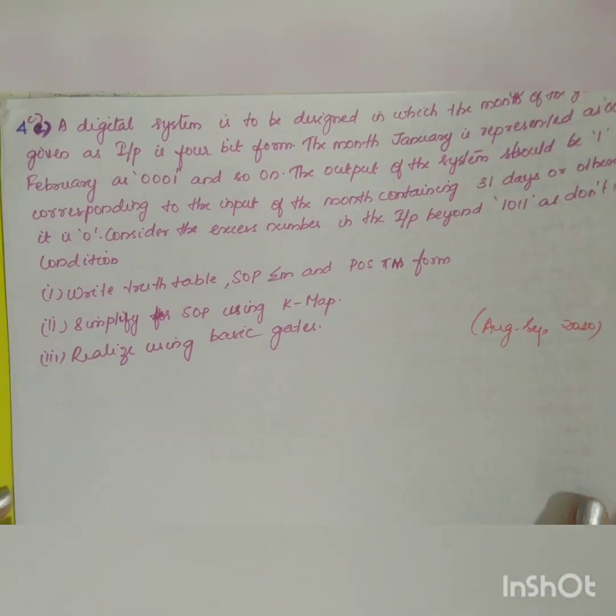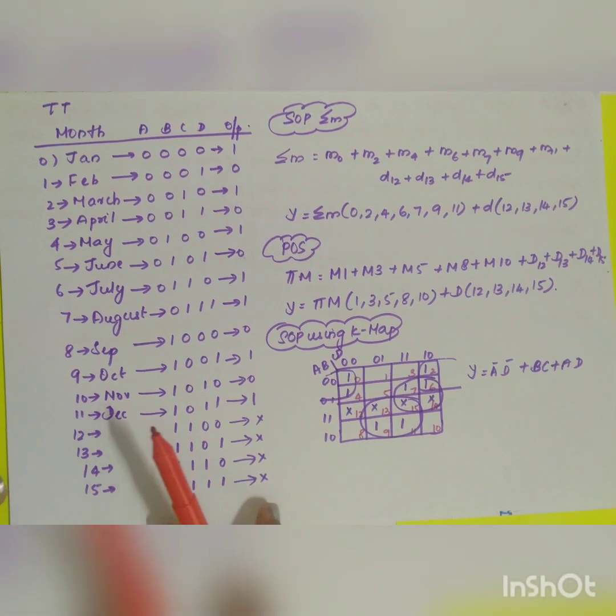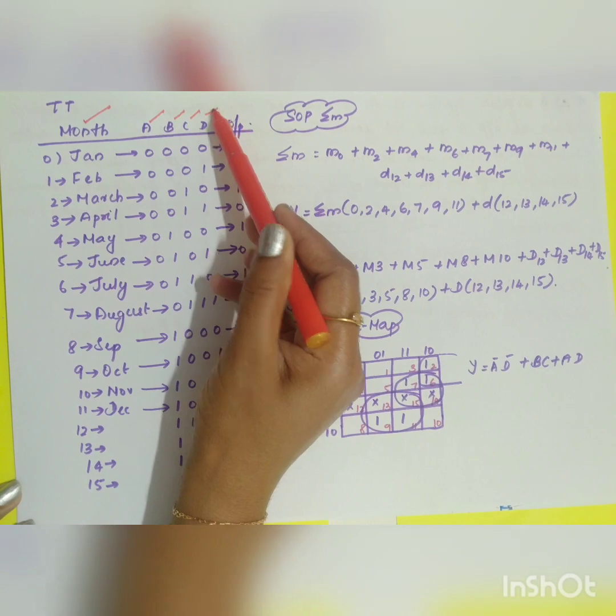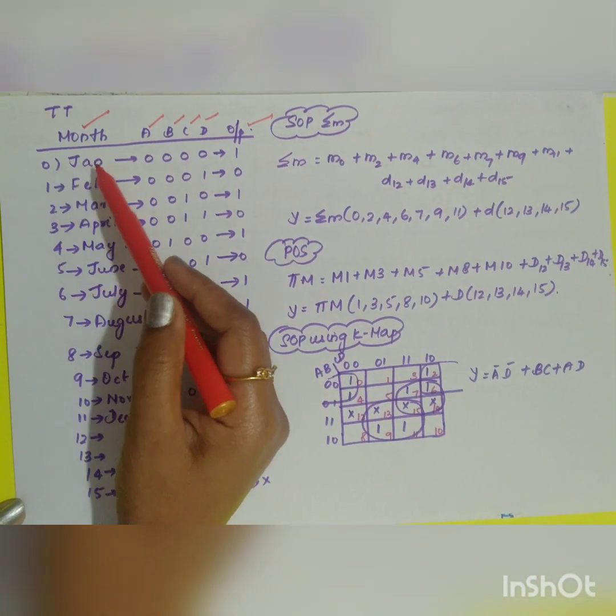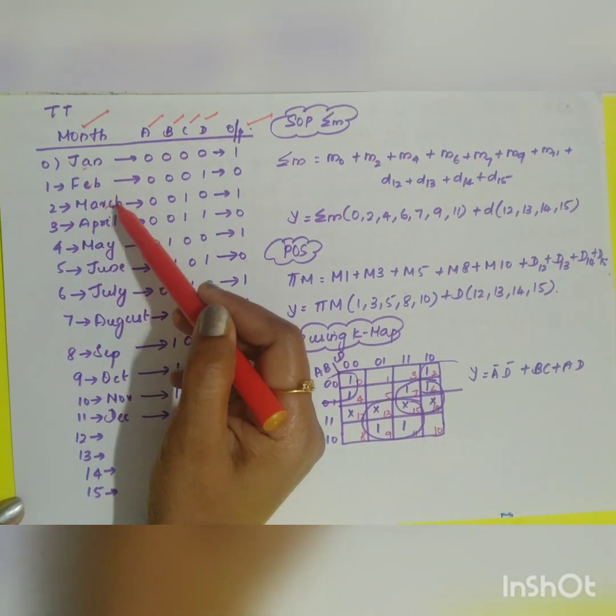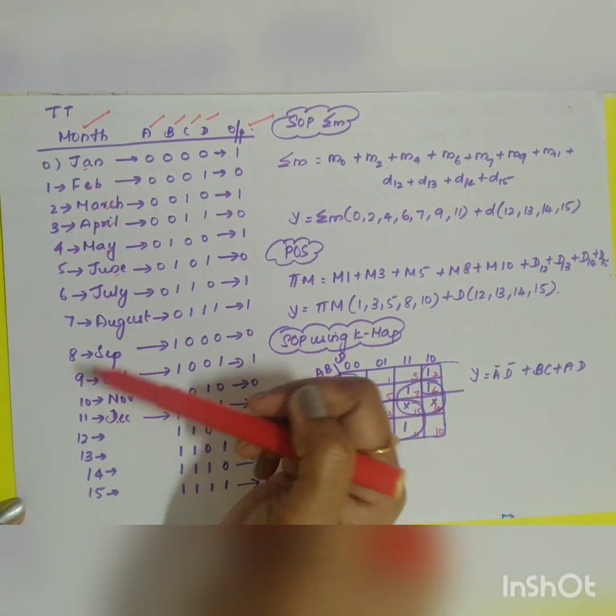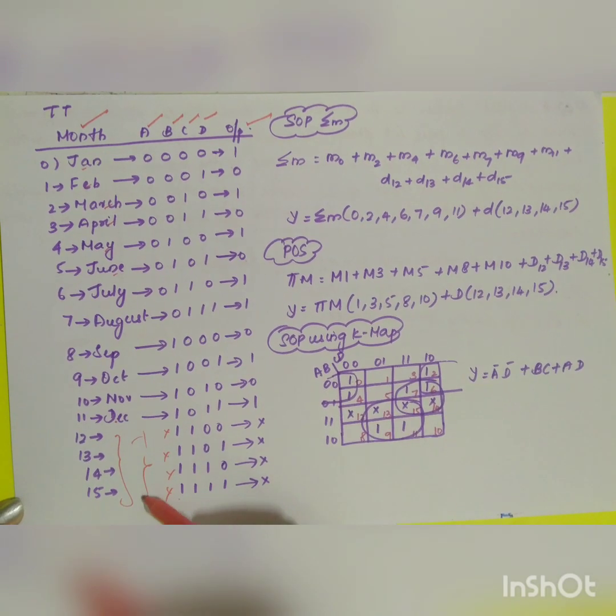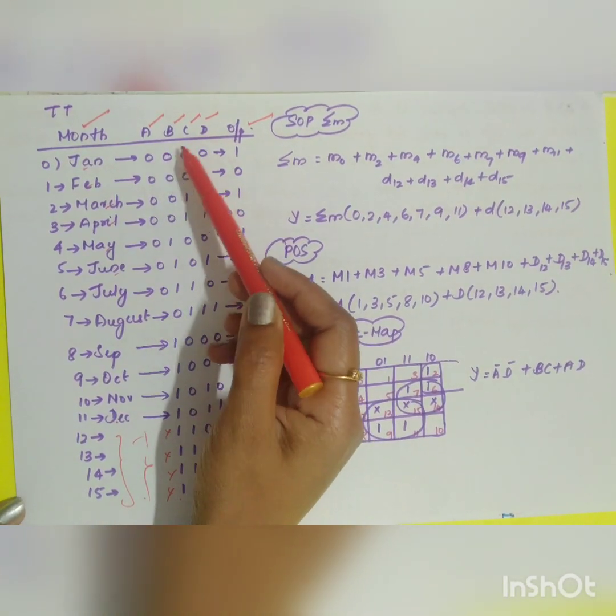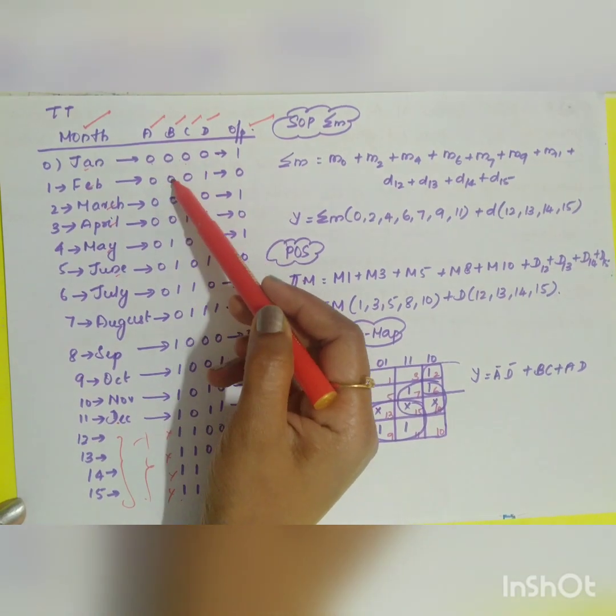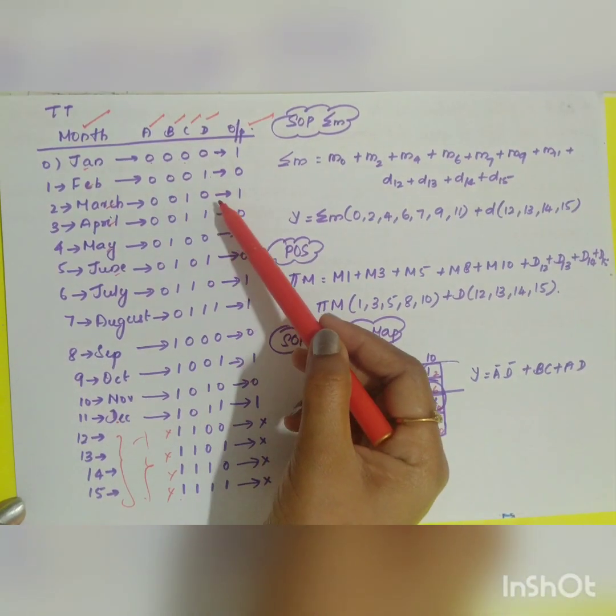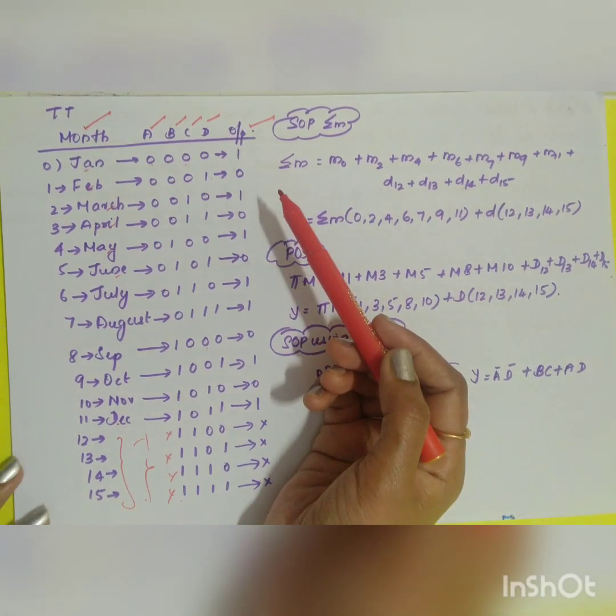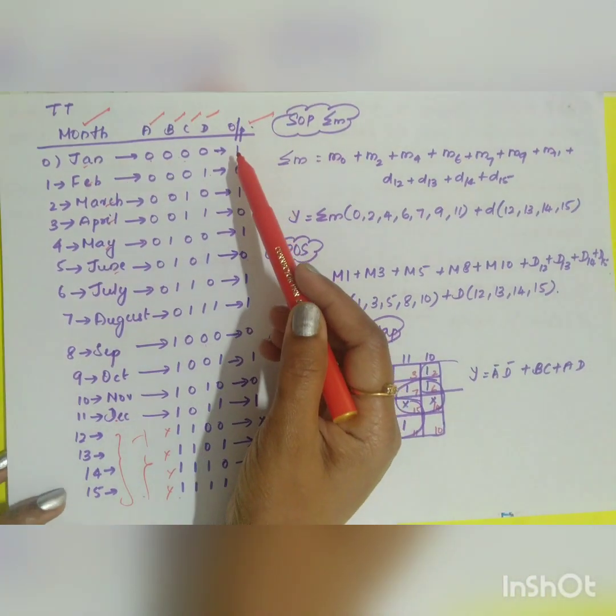Consider the excess numbers in the input beyond 1011 as don't care condition. What do you have to find out? Write the truth table SOP and POS form. Second, simplify for SOP using K-MAP and realize using basic gates. What is given in your question: month of the year is taken as the input and it is 4-bit, ABCD. The inputs are January 0000, 0001, and it goes on in binary representation.